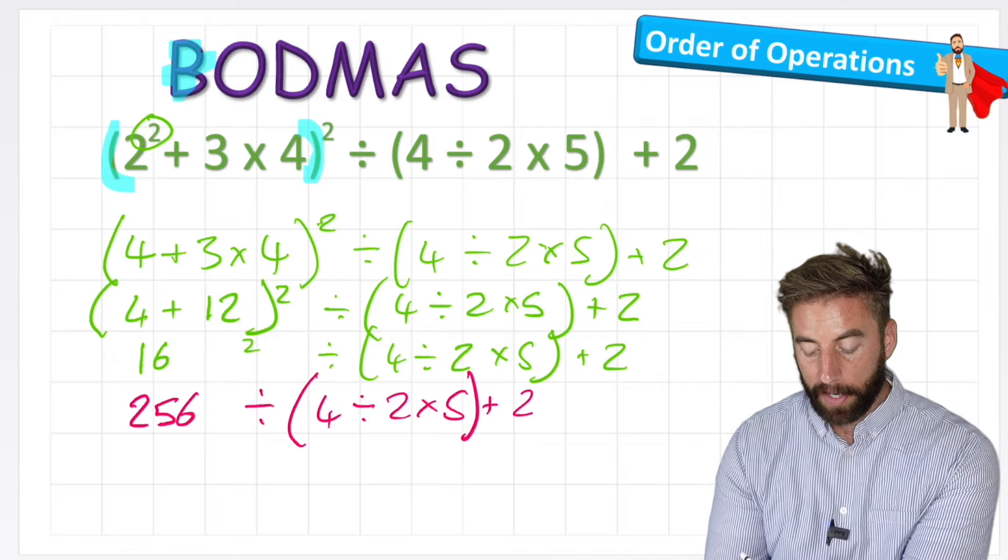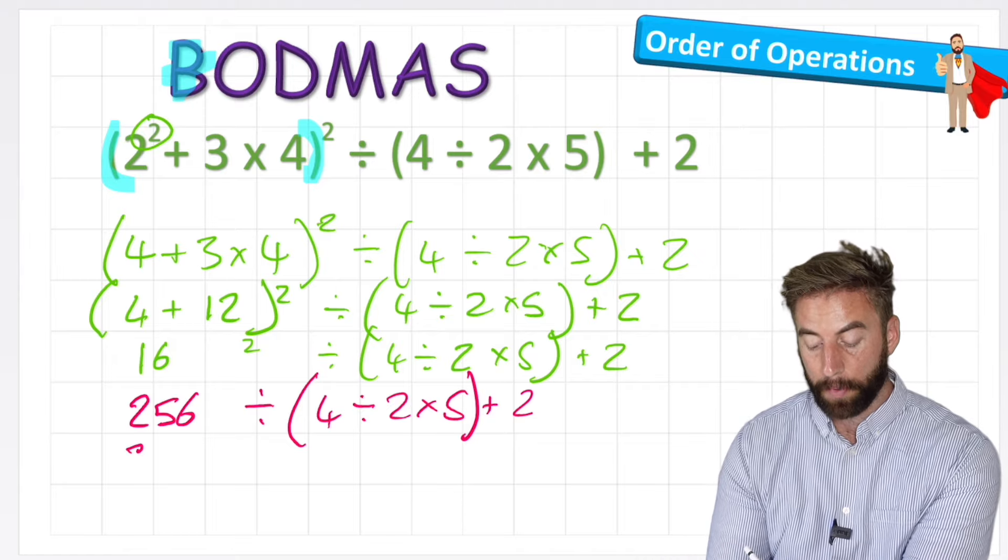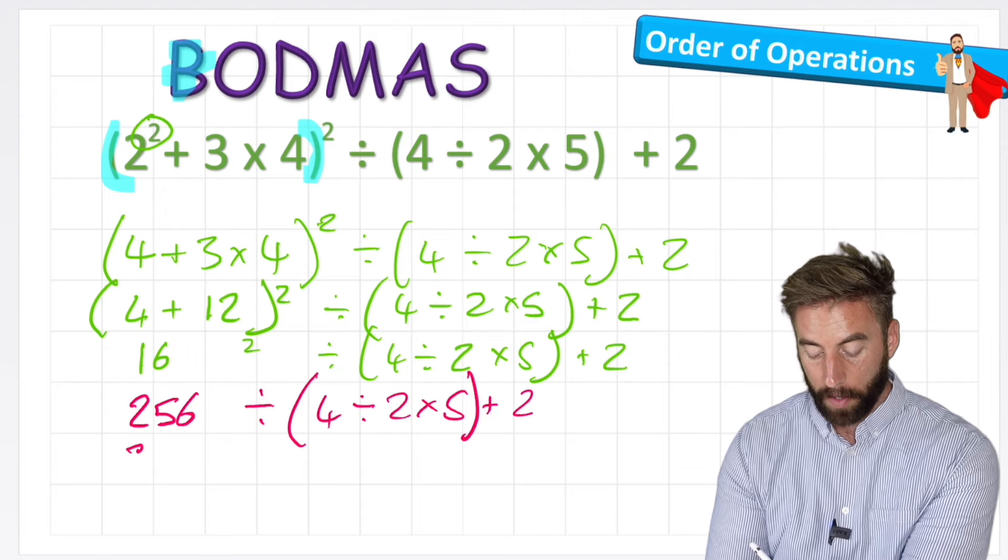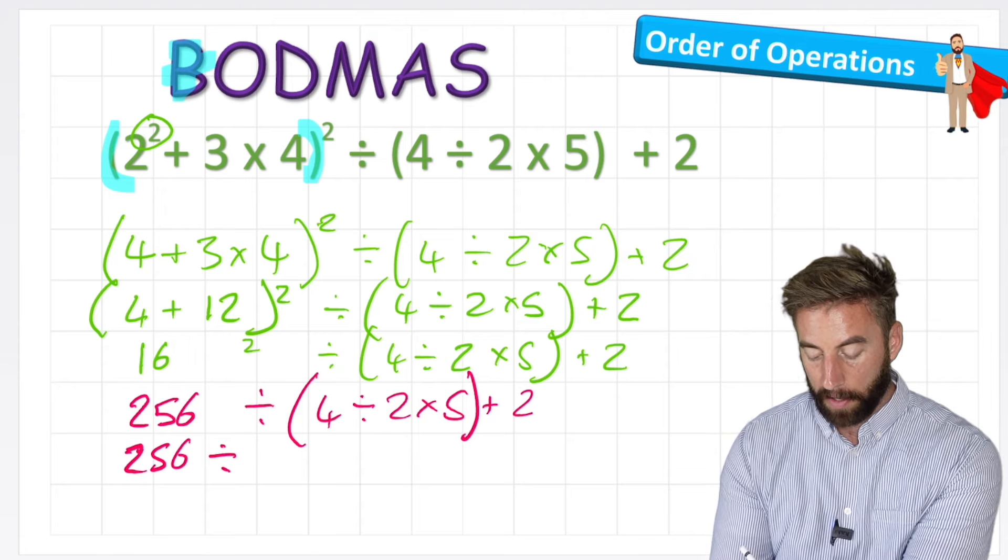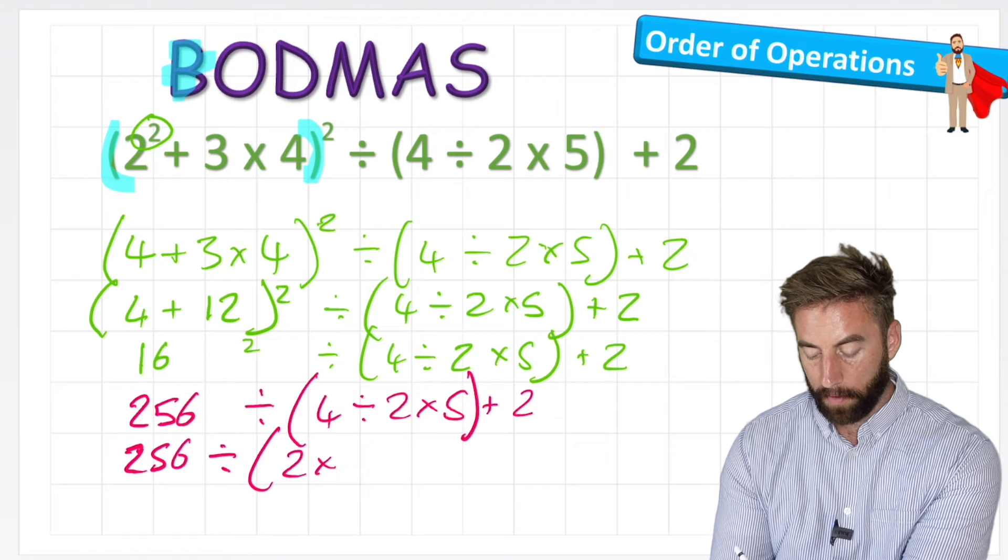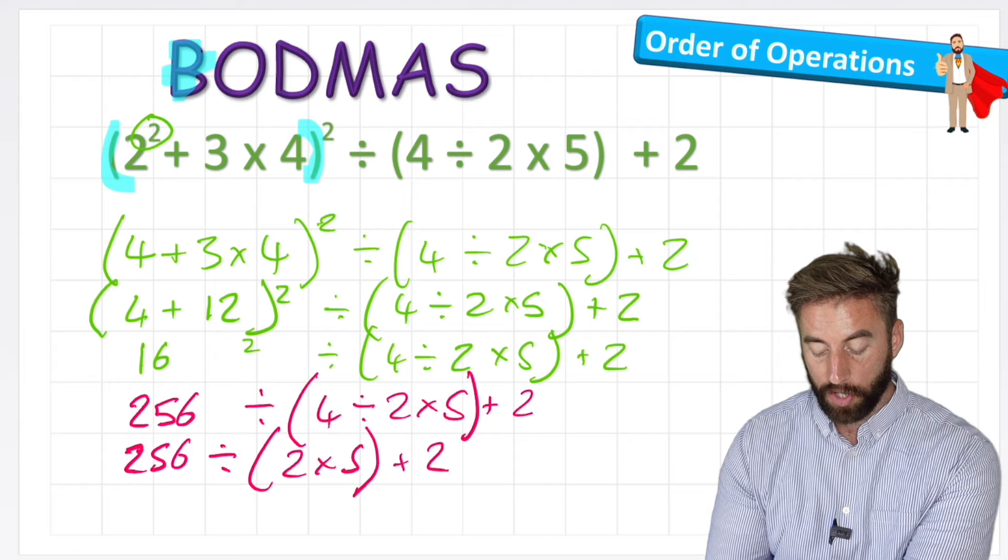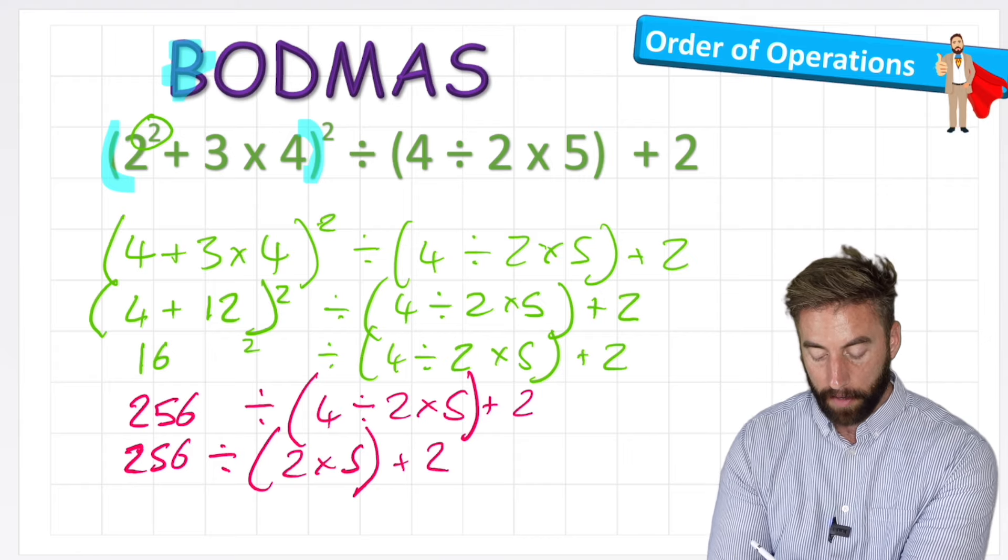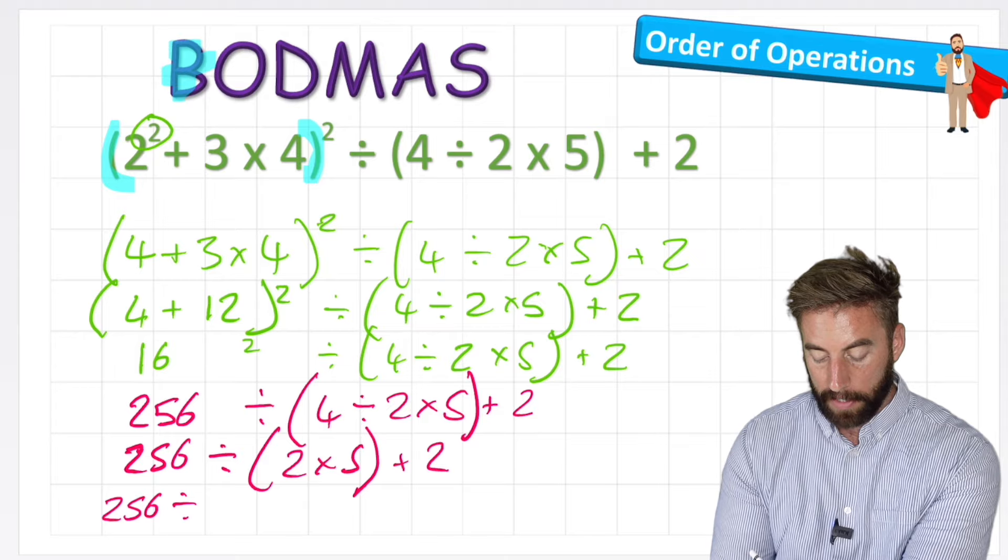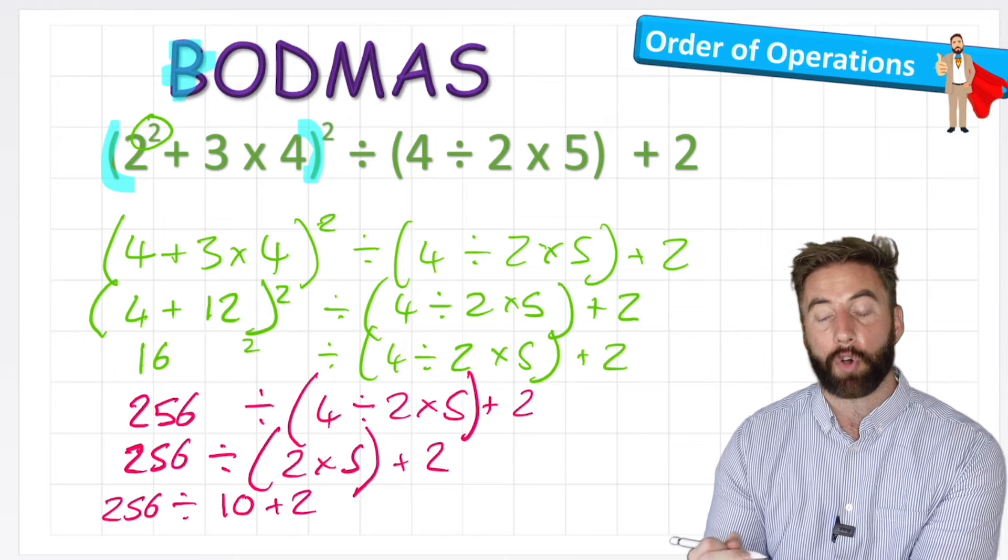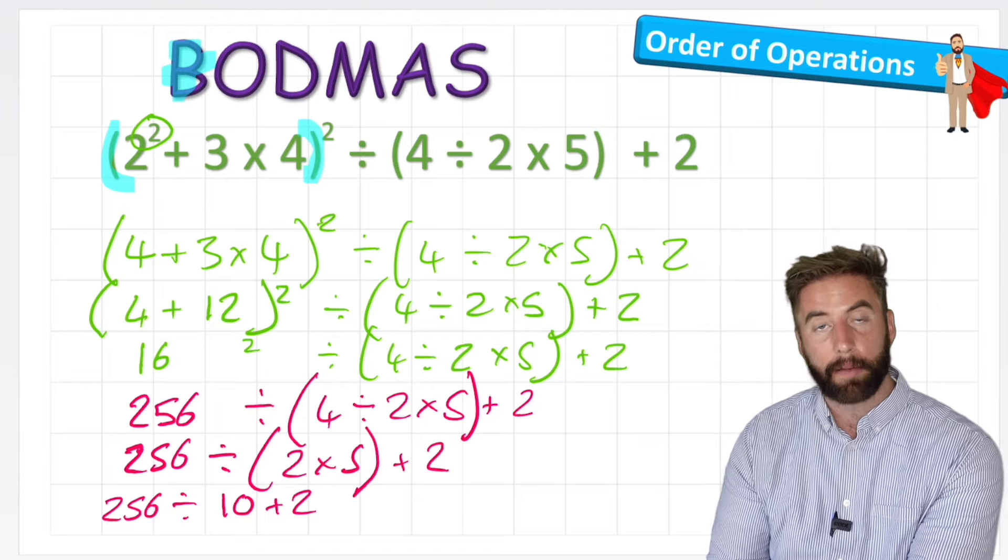Now I can move on to my other bracket, and I can see that in this bracket, I'm going to have to work out the division first, which would be 4 divided by 2, which is 2. So I'd end up with 256 divided by 2 times 5 plus 2. And now in my next row, I'm going to do the multiplication of this bracket, which is 2 times 5. So I'm ending up with 256 divided by 10, and now I've got rid of the bracket.